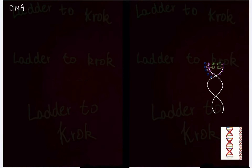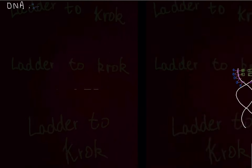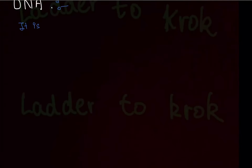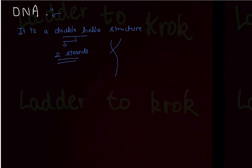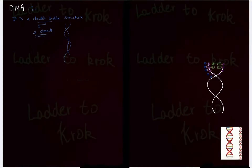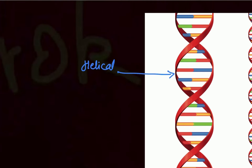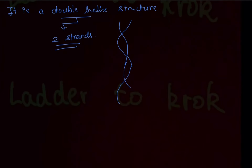Let's do the next topic: DNA. DNA has a double helix structure — double helix means it has two strands which are coiling on one another. If you look at this picture, you can understand this helical structure. It is double helix because this is one strand and this is another strand.